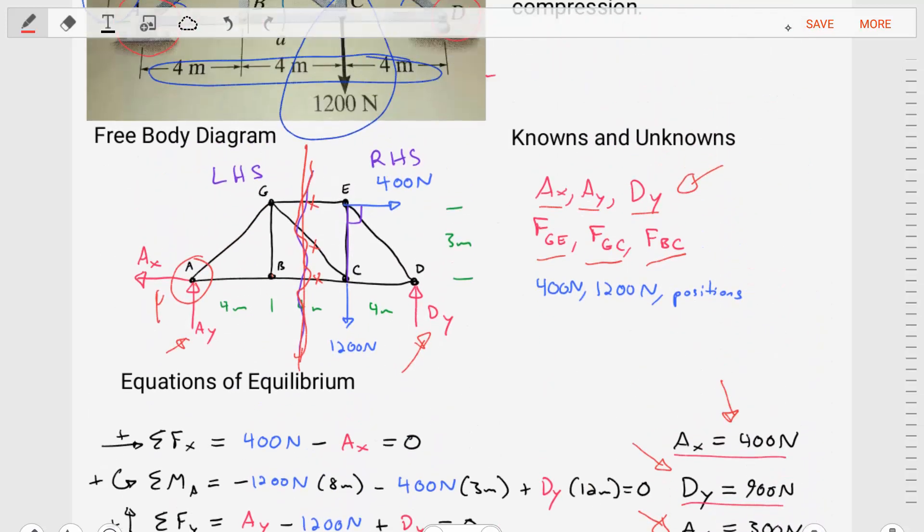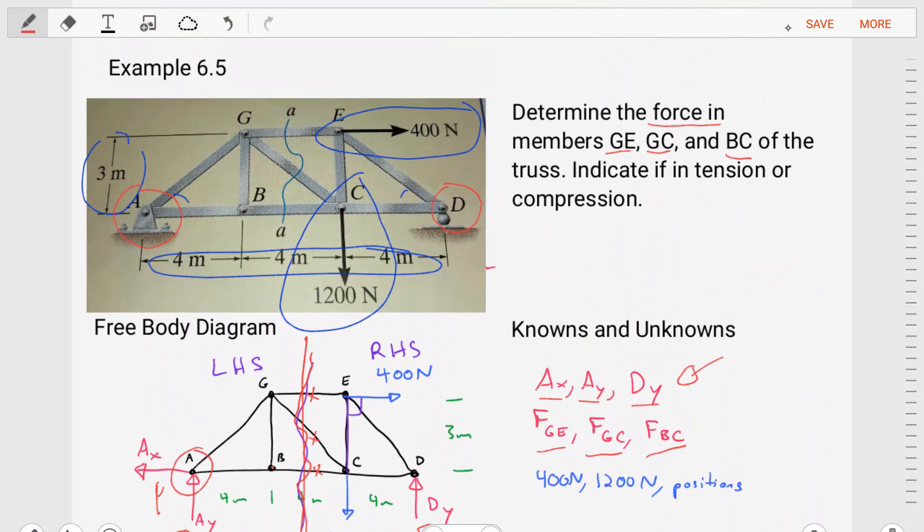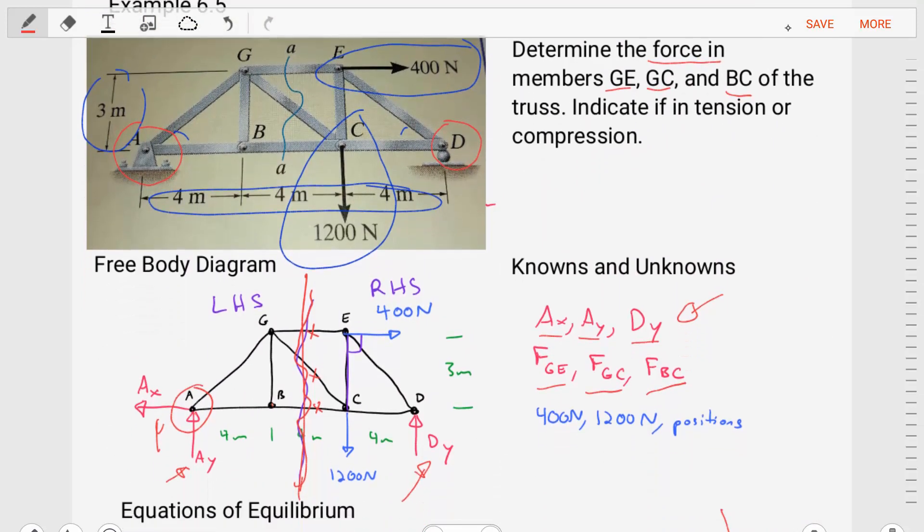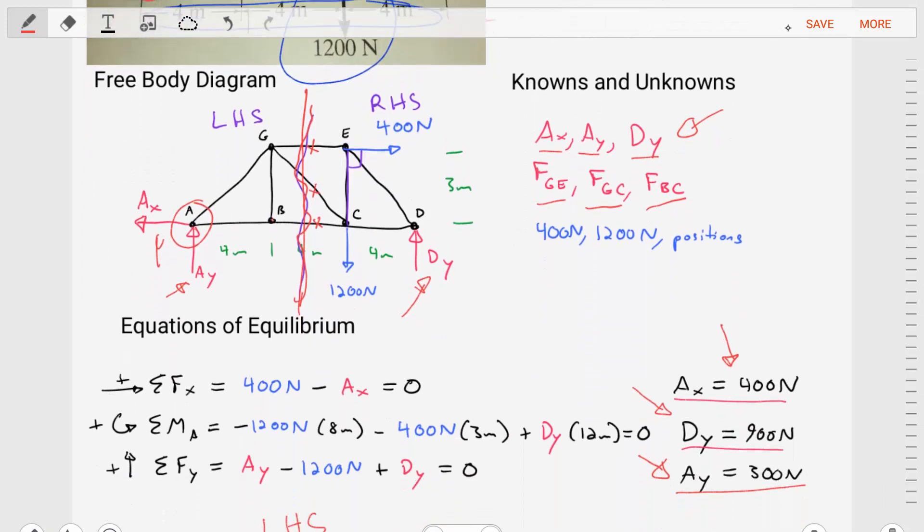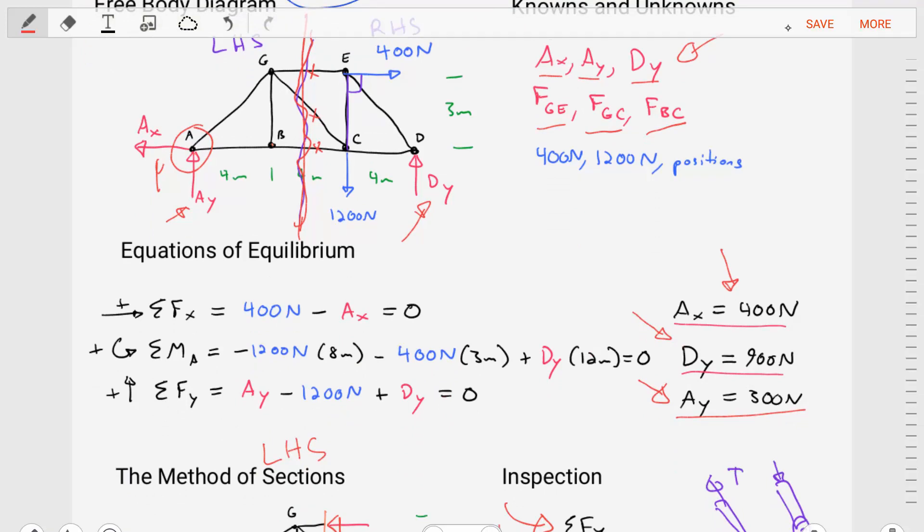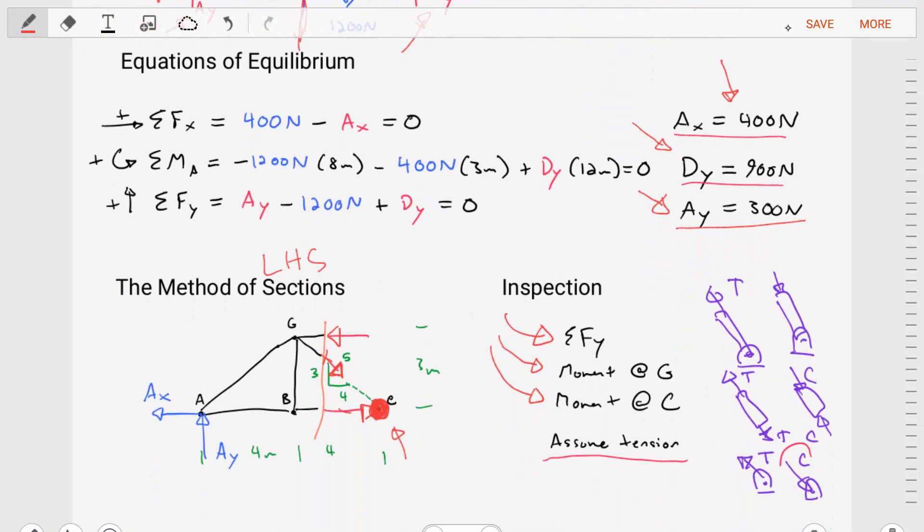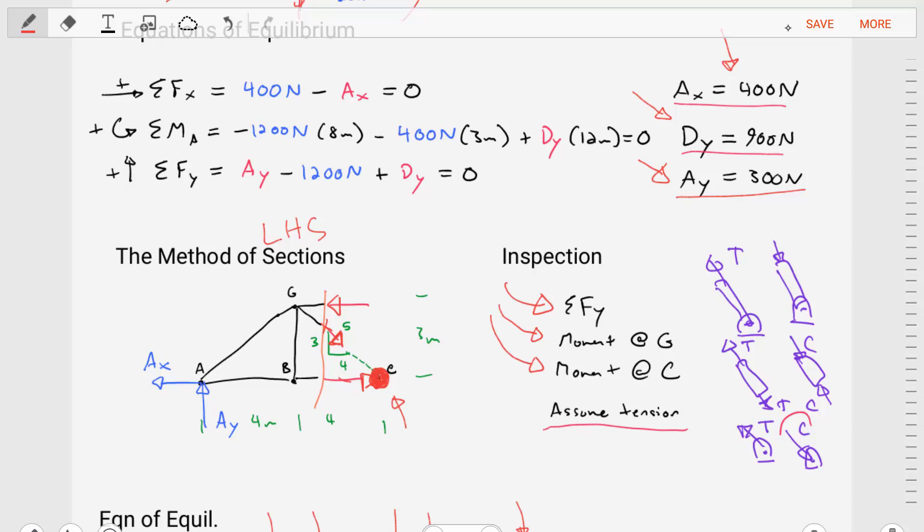And so we've been able to successfully apply the method of sections. We started with evaluating our diagram, identifying our knowns and unknowns, and crafting a free body diagram. Then we solved for the magnitude of those support reactions. Afterward, we chose a section, left-hand side or right-hand side, and applied inspection to figure out what are the senses of the forces in the members.